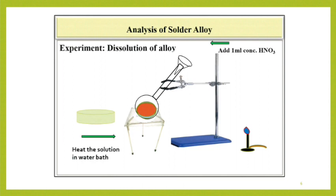Then heat the solution in a water bath for about 5-10 minutes. If the alloy does not dissolve, again add 5 ml distilled water and 1 ml concentrated HNO3 and repeat the procedure till the alloy completely dissolves.